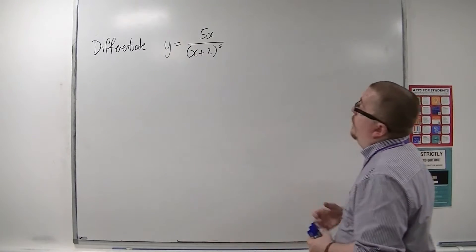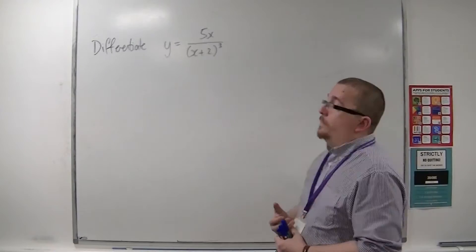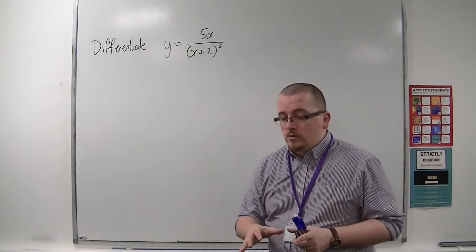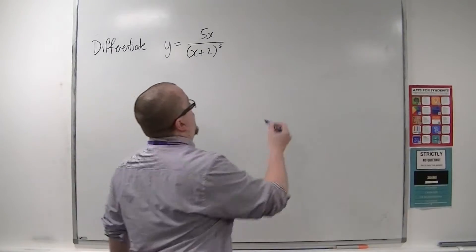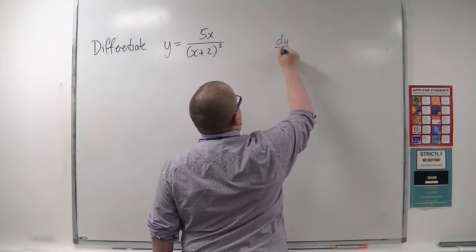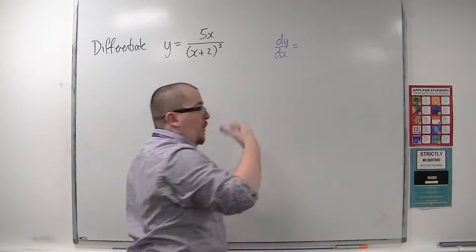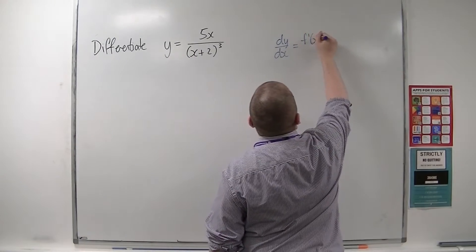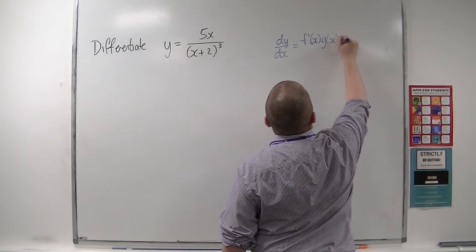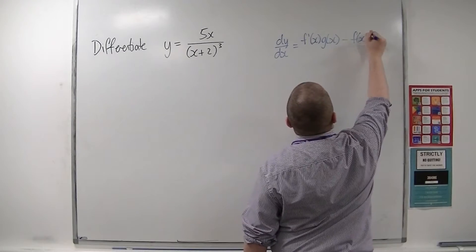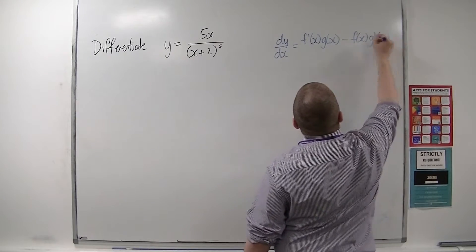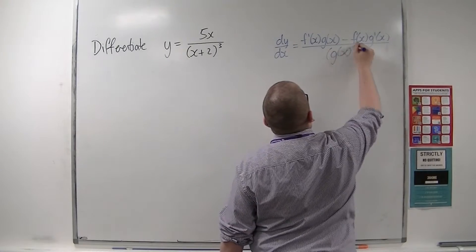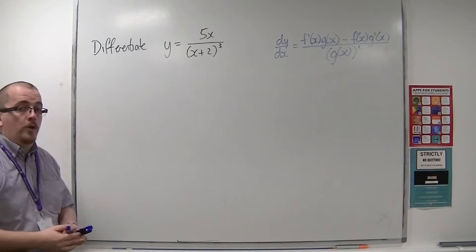Let's say we were asked to differentiate y equals 5x over (x+2)³. For this we're going to use the quotient rule. The quotient rule says dy/dx, if y equals f over g, then dy/dx is f'g minus f times g' over g².